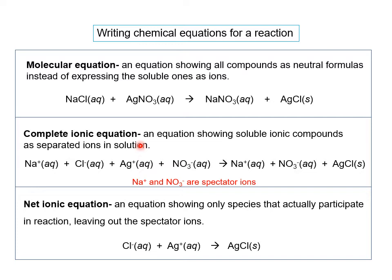In complete ionic equations, we show the ions that are soluble as separated ions. Notice that NaCl up here was aqueous, so we broke it down into Na+ and Cl- in solution. Same thing with AgNO3 — we wrote it as Ag+ and NO3-. Also note that polyatomic ions break up as units. On the product side, sodium nitrate was also aqueous so we wrote it as ions, but silver chloride is a solid, which means it's insoluble, so we show it in the complete ionic equation as an unionized neutral compound.